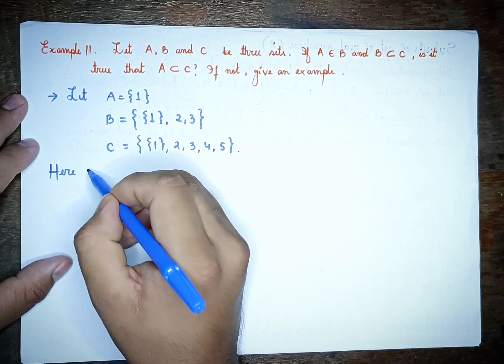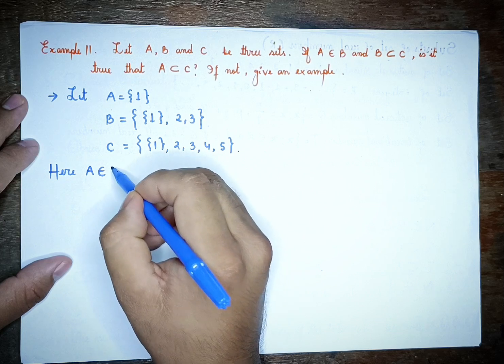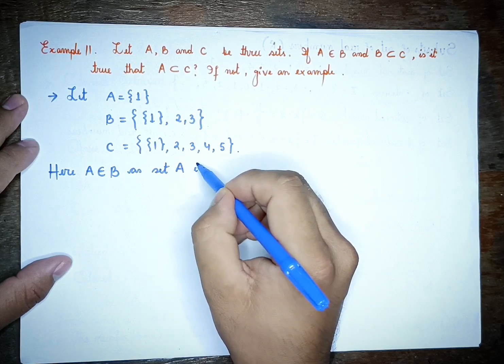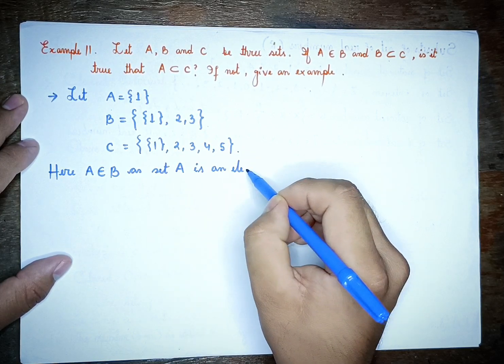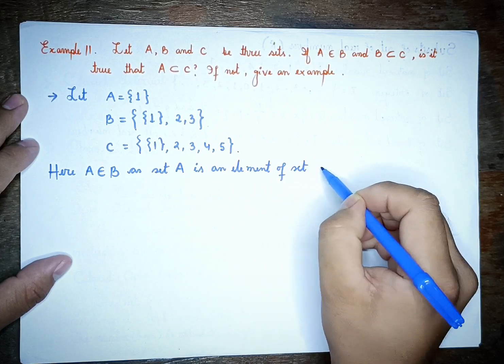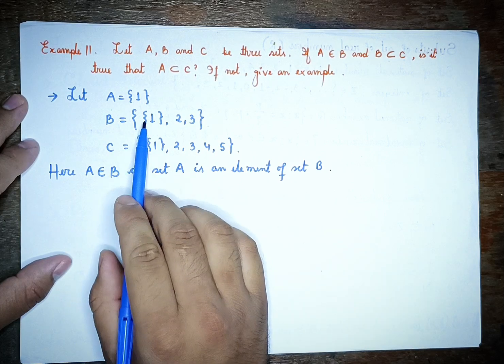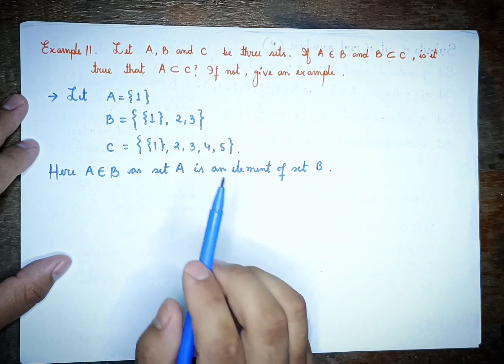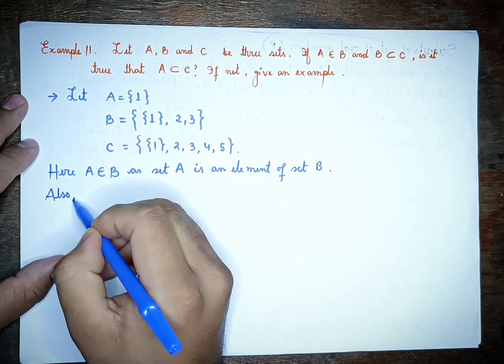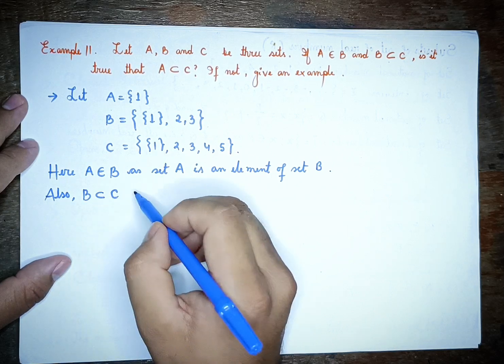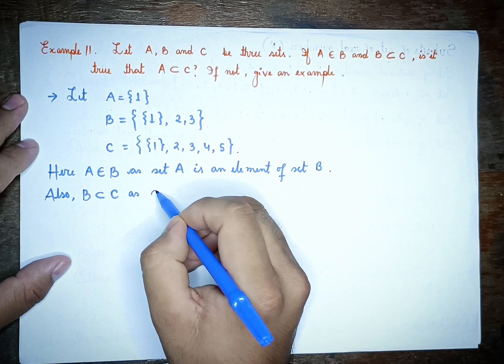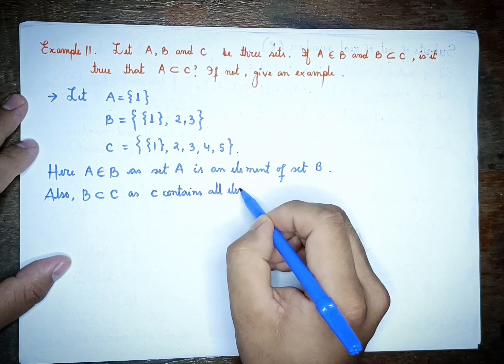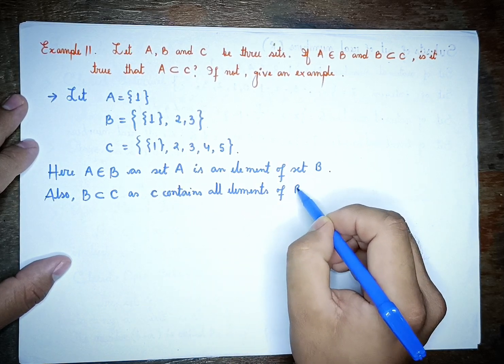A belongs to A and B is set, A is an element of set B. Also, B is a subset of C as C contains all elements of B.